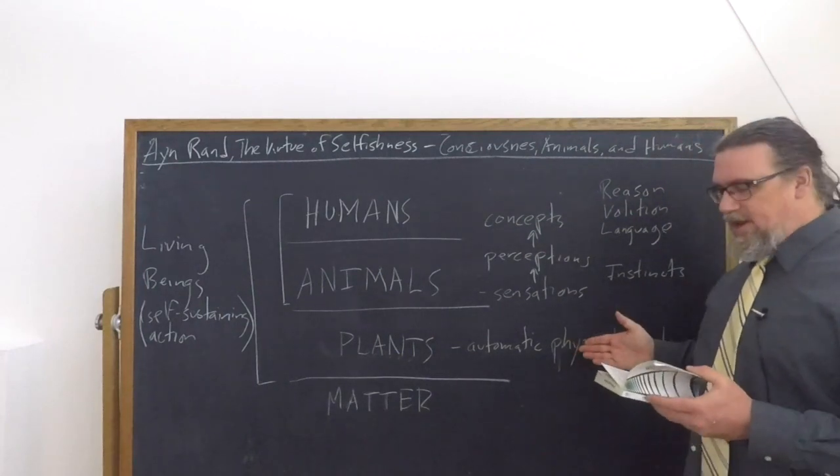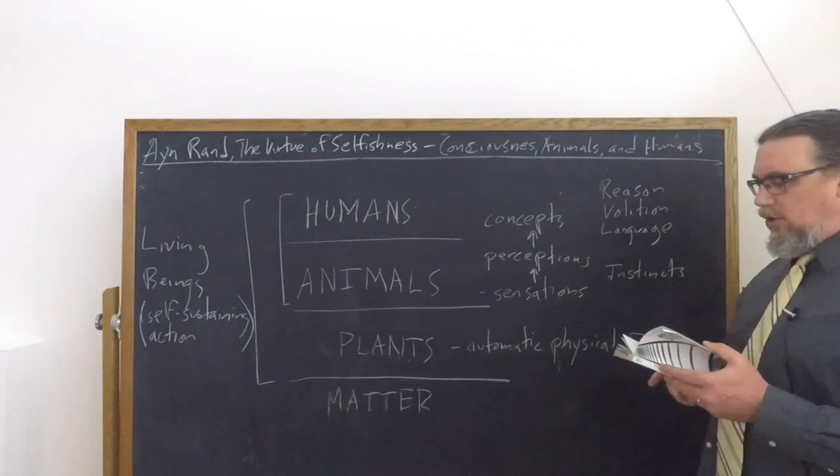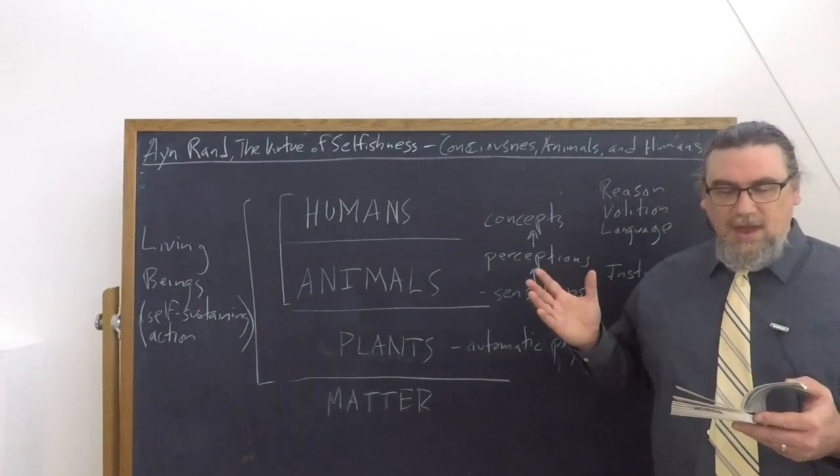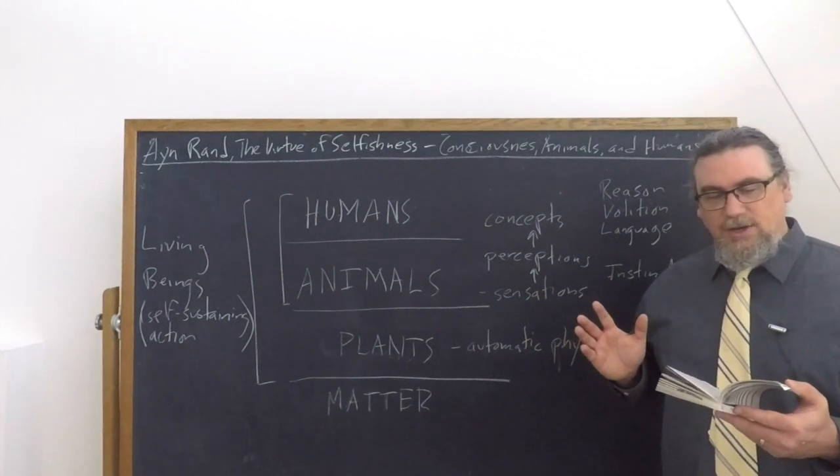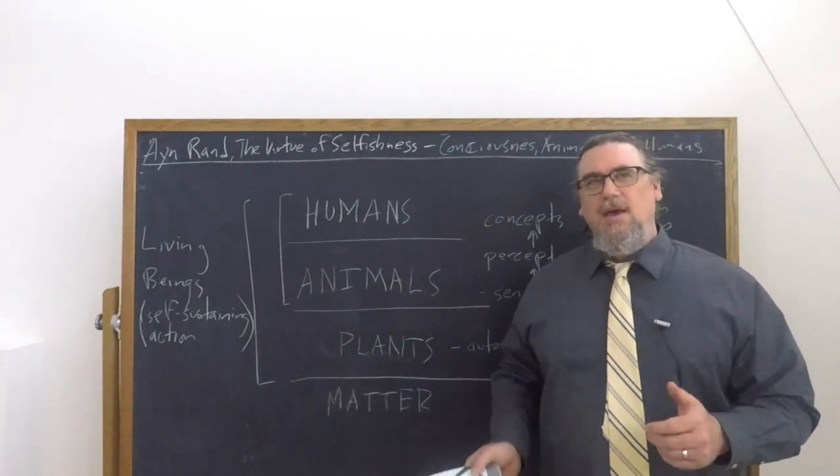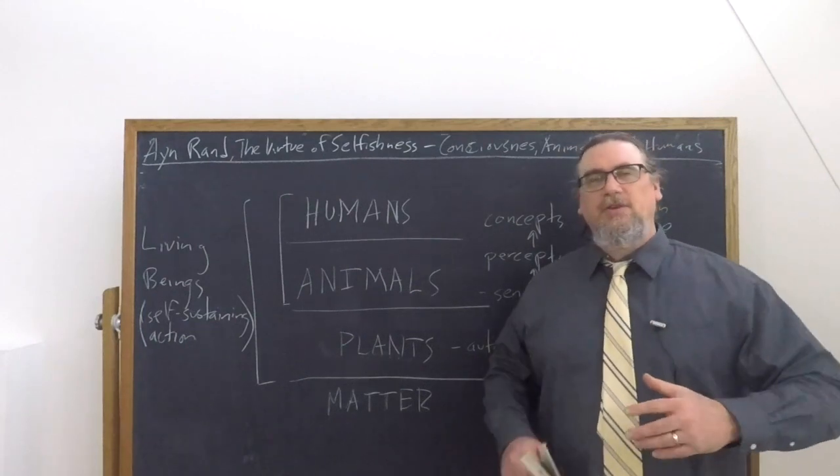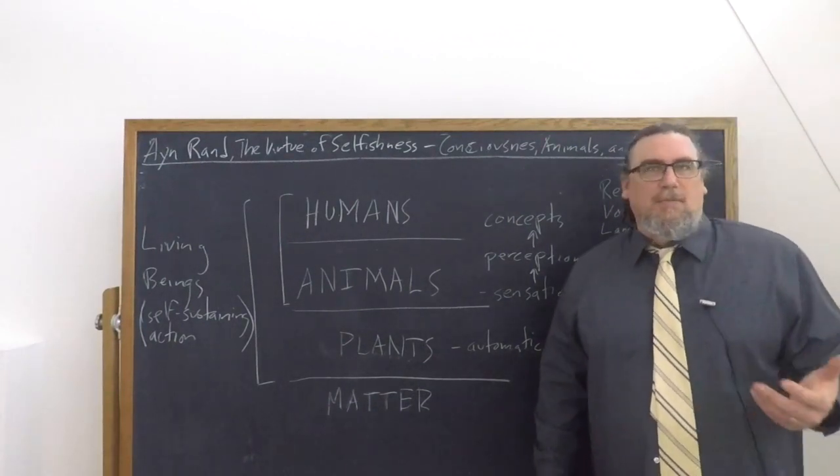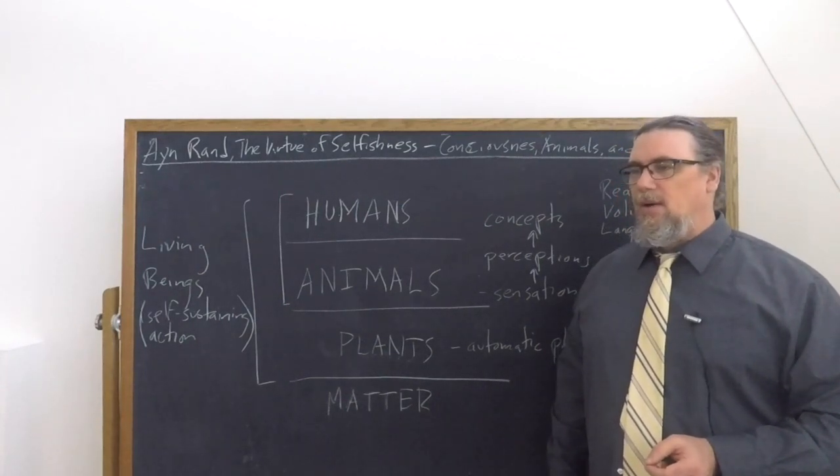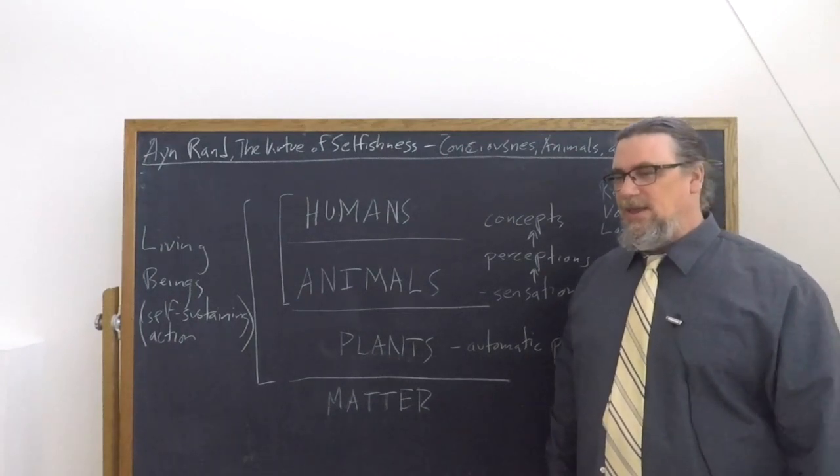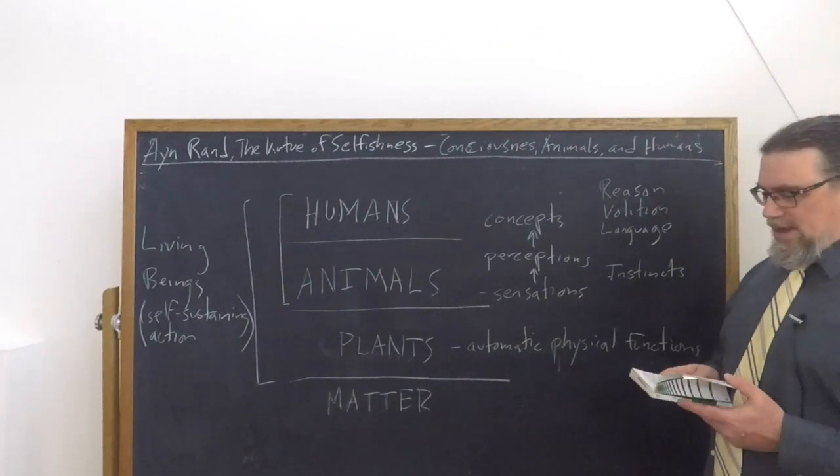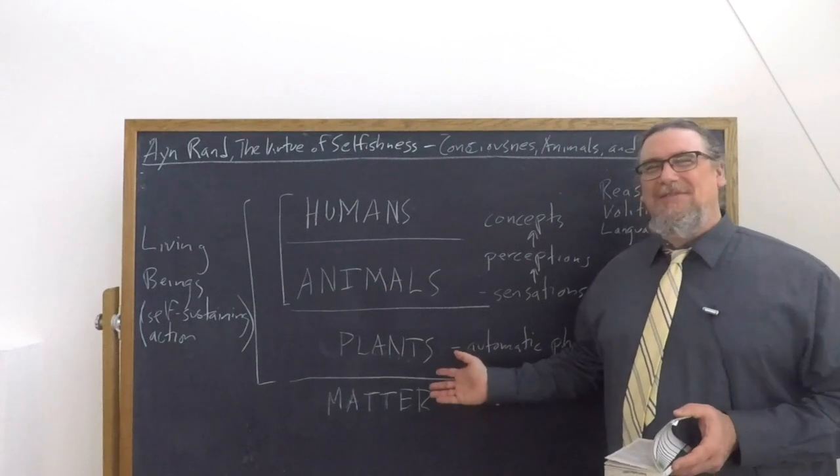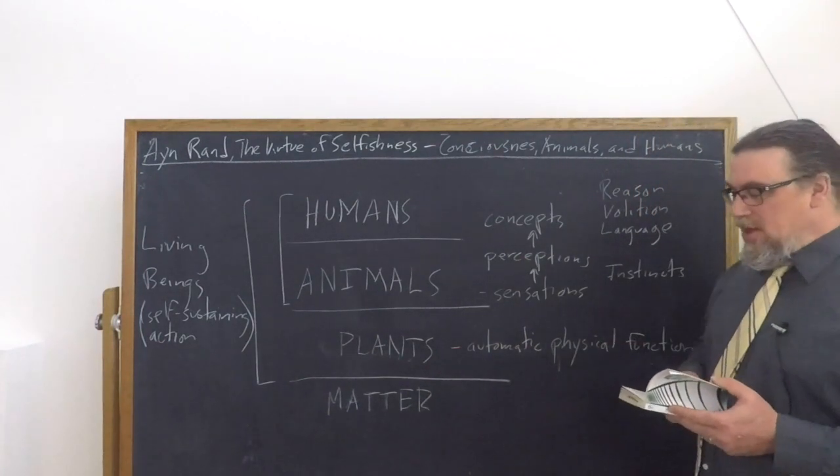And she says what standard determines what is proper in this context. The standard is the organism's life or what is required for the organism's survival. So different kinds of plants and animals and single-celled organisms, they attempt to maintain themselves in existence by carrying out their typical activities that are largely, we would say nowadays, the product of their DNA. So when it comes to plants, she says that plants are really just engaging in sort of what she calls automatic physical functions. They're not doing anything consciously or deliberately. She calls these, for that reason, simpler organisms. They are not actually conscious. They don't feel pleasure and pain.